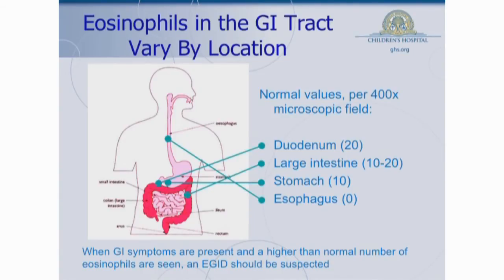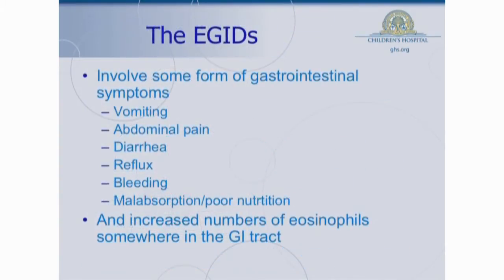When you have a higher than expected number of eosinophils in any of those areas, and you combine that with the presence of GI symptoms of some sort, you have to at least start to suspect that perhaps an eosinophilic gastrointestinal disorder is present. The EGIDs in general involve some form of GI symptoms typically, and that can be any number of things from vomiting and abdominal pain, diarrhea, reflux symptoms, even GI bleeding or loss of nutrients and malabsorption. You have to combine that with the presence of increased numbers of eosinophils somewhere in the GI tract before you would make a diagnosis of an EGID.